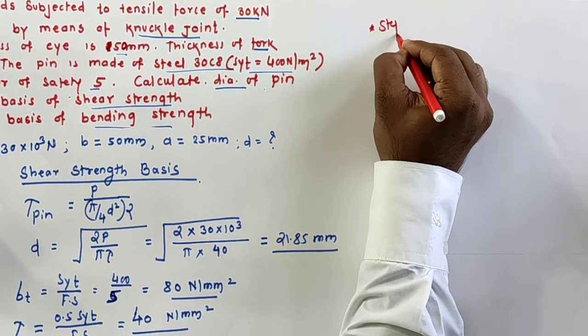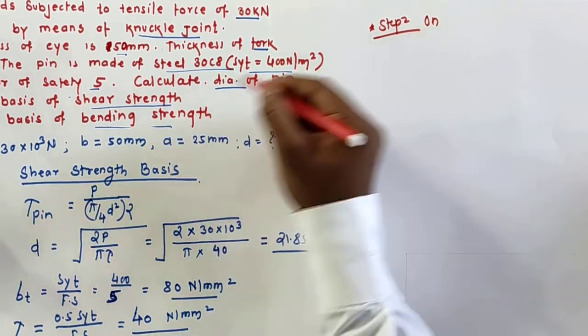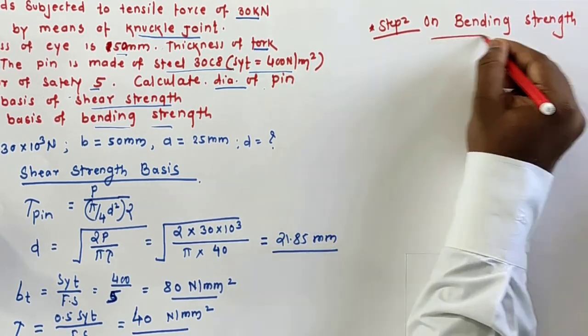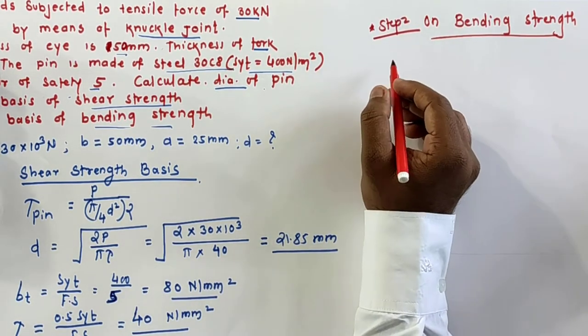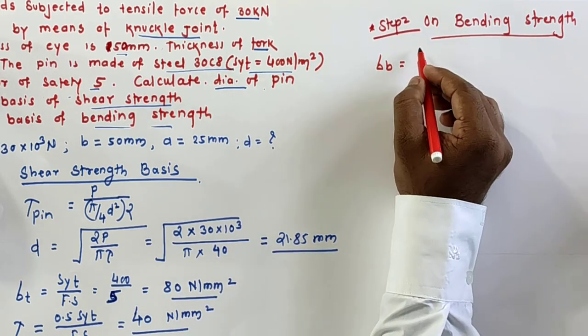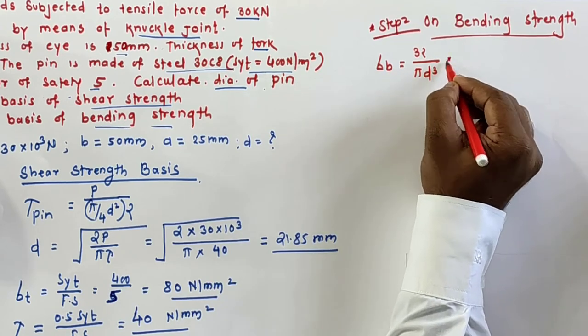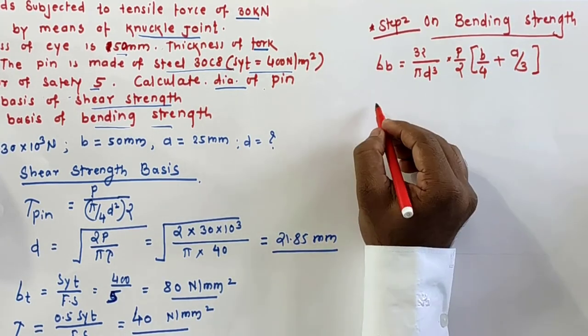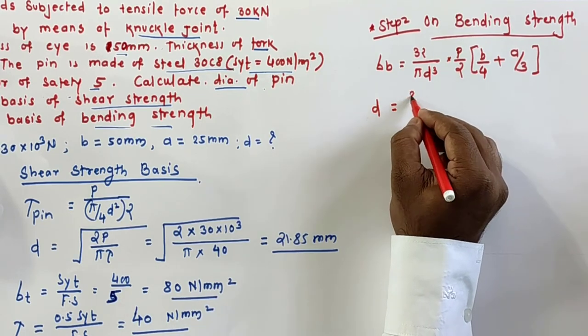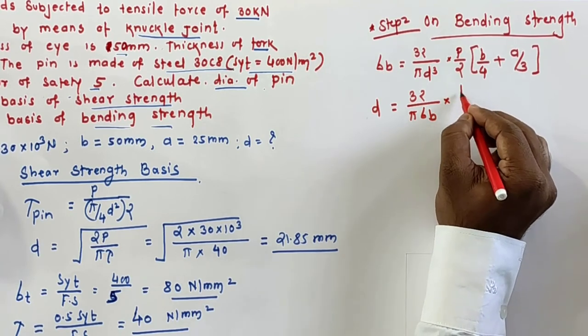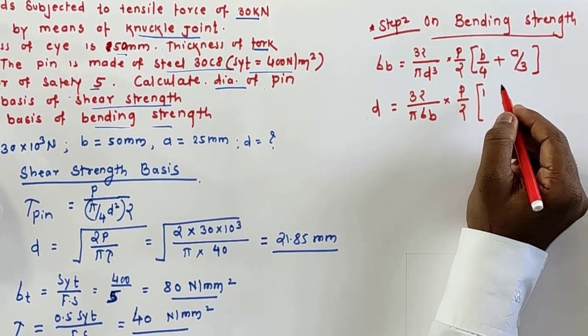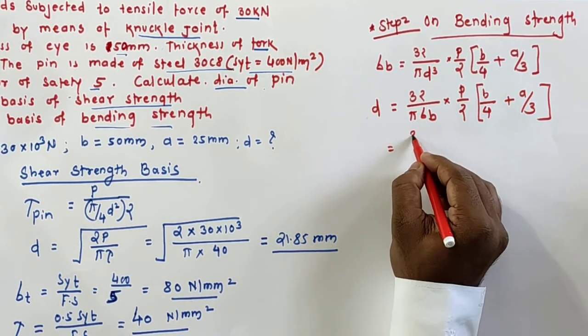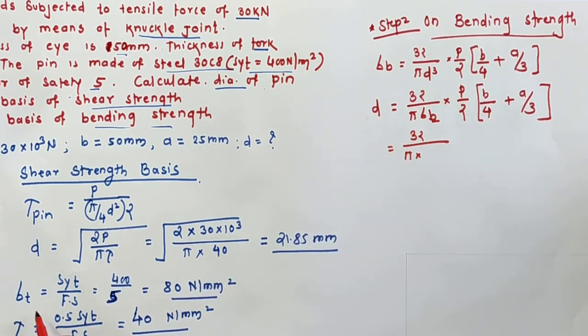Now step number two: on the basis of bending strength. So for the bending I'll write as we know sigma B is equal to 32 by pi D cube into P by 2 in bracket, one-fourth of B plus one-third of A. And through which I am interested in diameter, so I can write D equals 32 by pi into sigma B into P by 2 in bracket B by 4 plus A by 3. So 32 as it is, pi into sigma B - I told you we'll have to take sigma T 80.